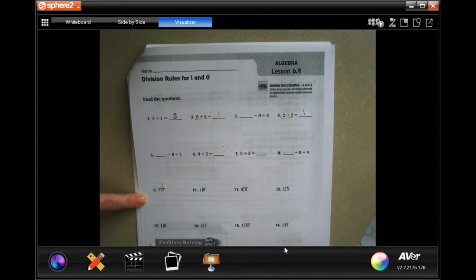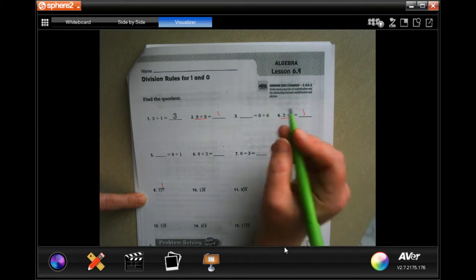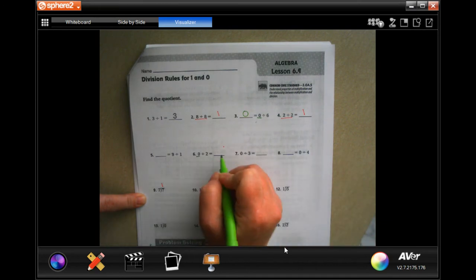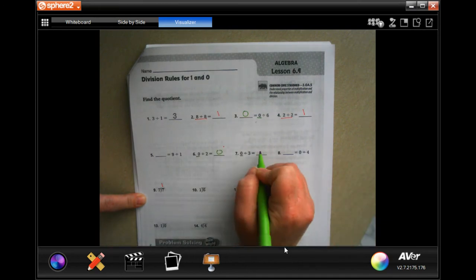Anywhere that you see a 0 in a division problem, the answer is going to be 0, every single time.